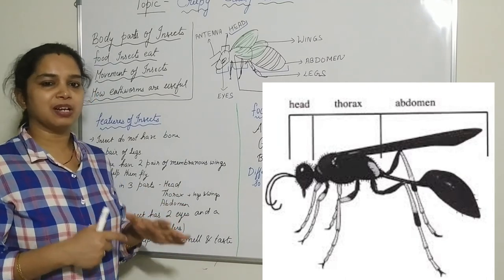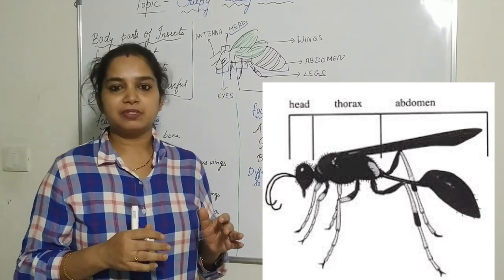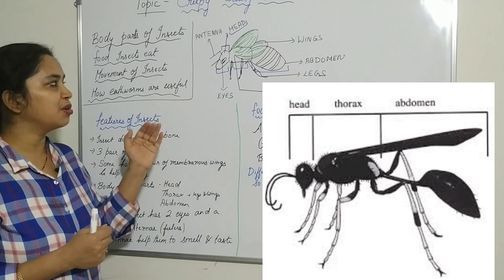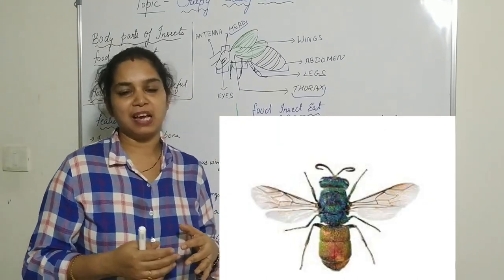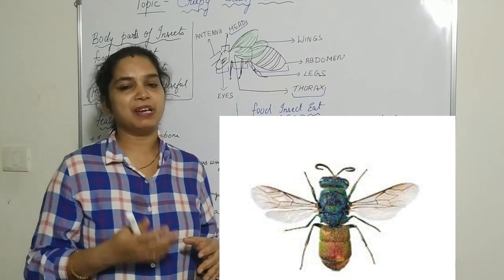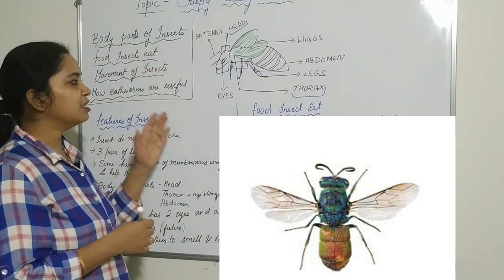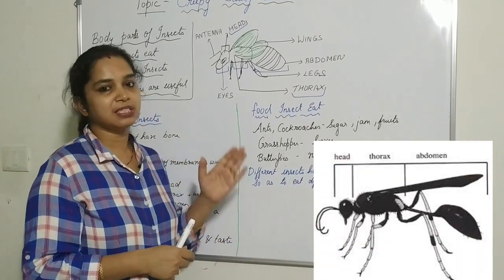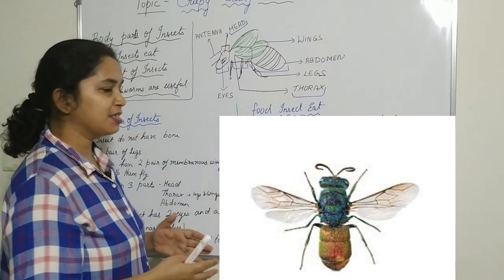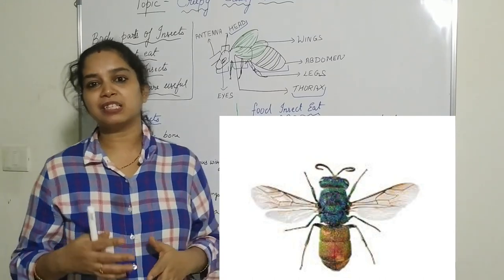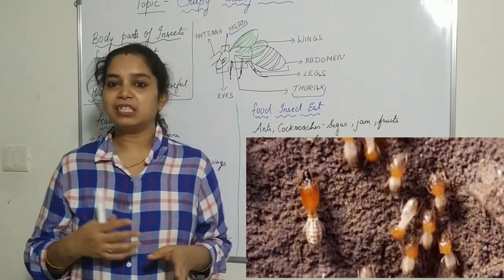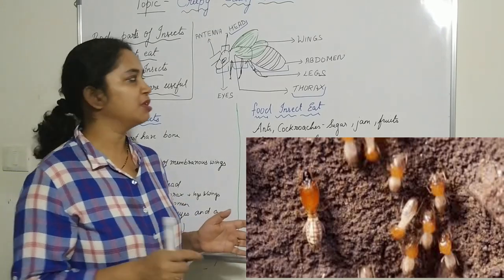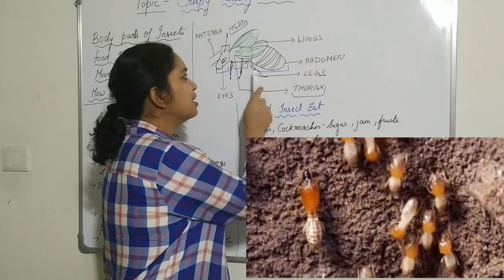The second part is the thorax. The thorax has three pairs of legs, meaning insects have six legs attached to the thorax. Some insects have one pair of wings and some have two pairs of wings. Not all insects have wings — for example, ants do not have wings. So the thorax is the middle part of the body and it holds the legs and wings.